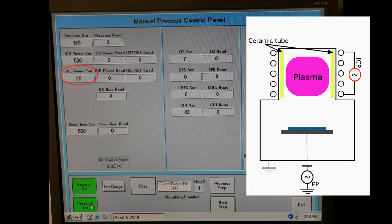The parallel plate power, labeled RIE on this tool, is responsible for accelerating the ions in the plasma towards the sample. Electrodes are placed at the top and bottom of the chamber, and power results in a DC bias, which accelerates ions towards the plate.